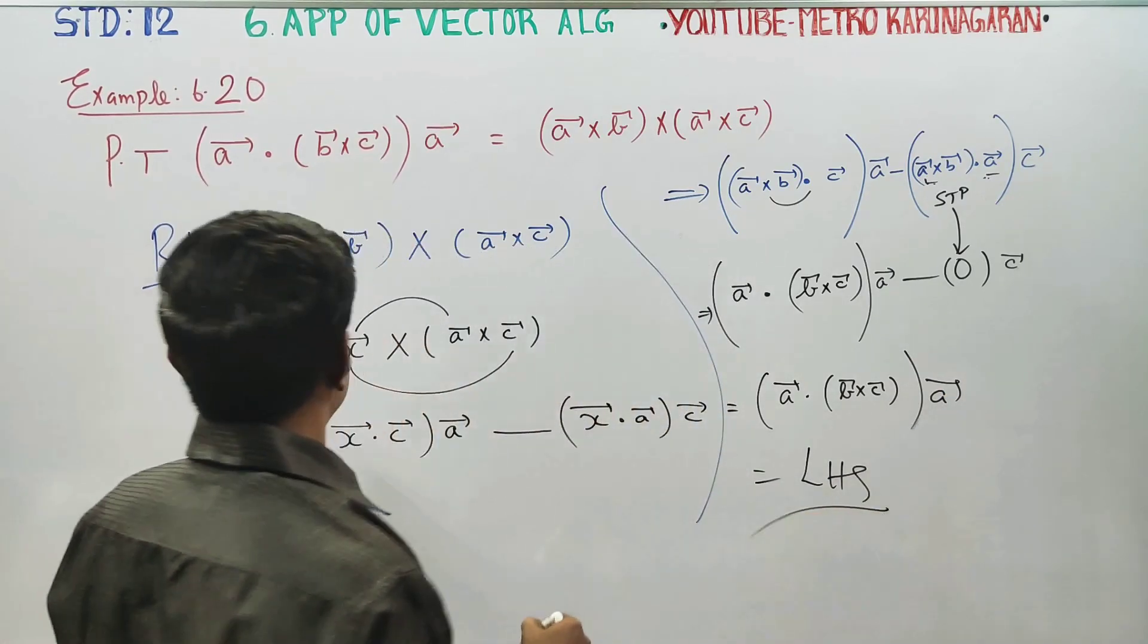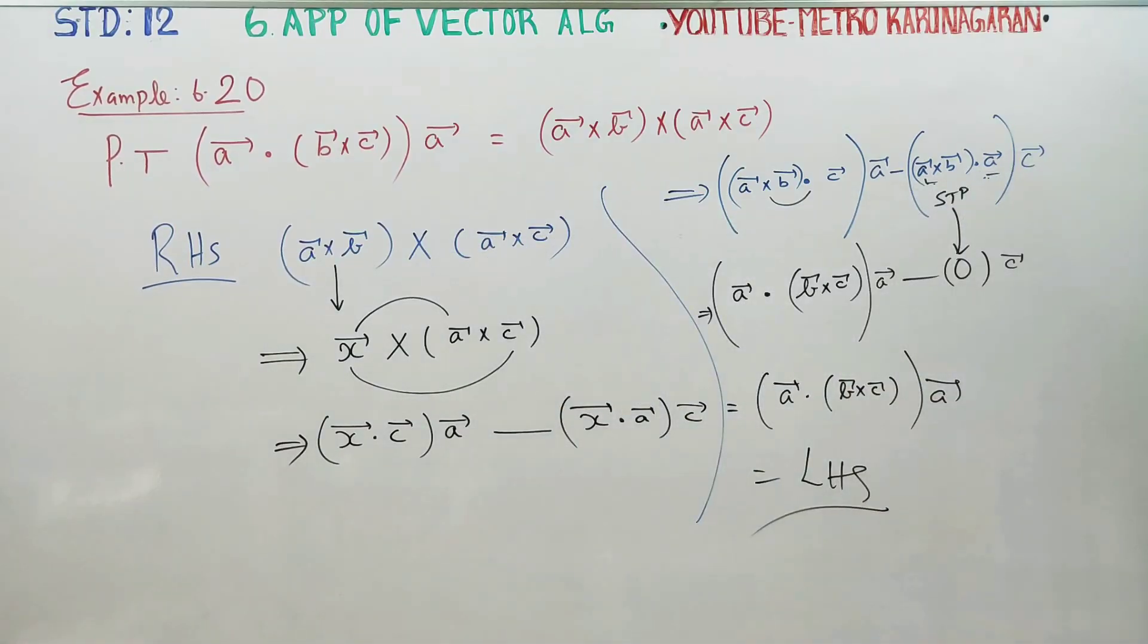A vector dot B cross C into A vector will be your LHS. You started with RHS and you have proved your LHS. Thank you.